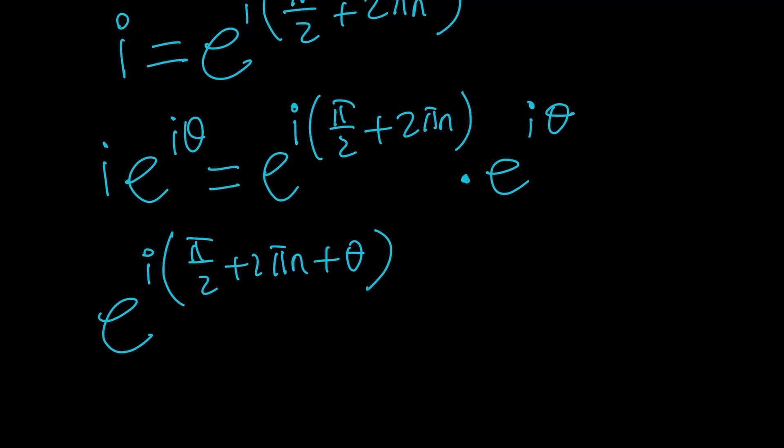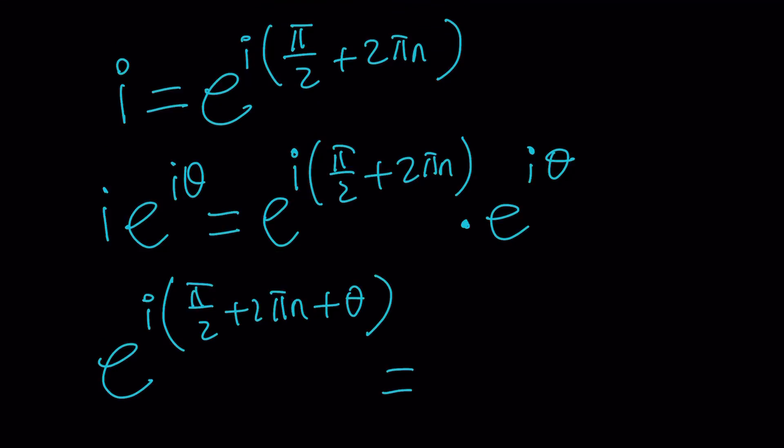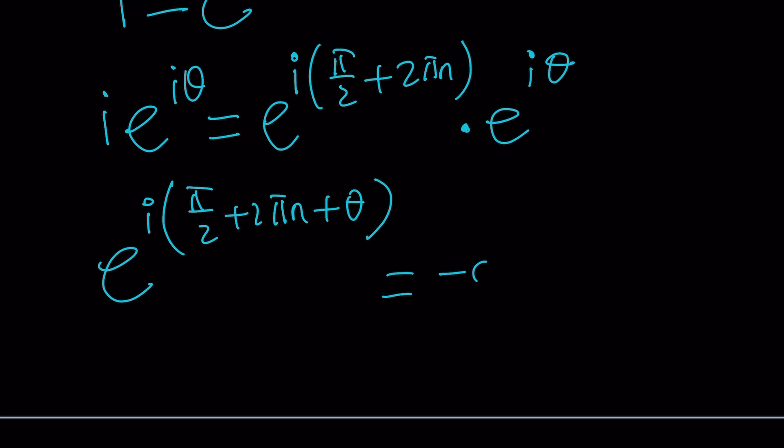And this is equal to what? This is equal to negative cosine theta plus i sine theta. Because remember, this is the left-hand side, this is the right-hand side, as written as LHS and RHS.